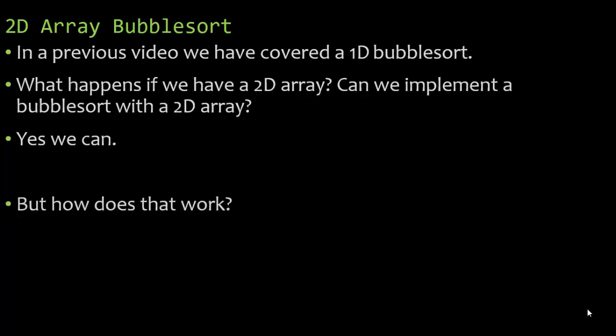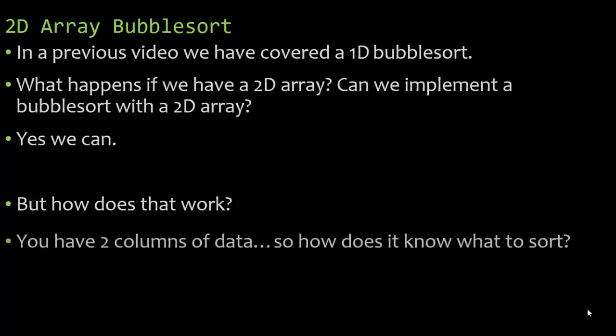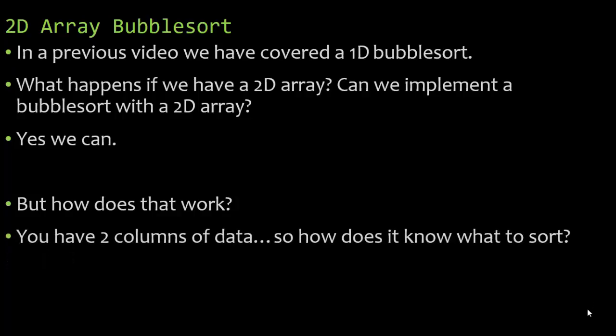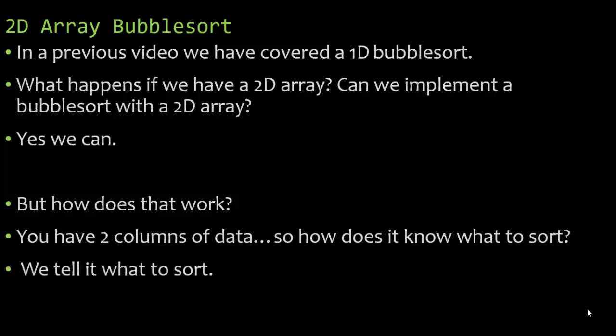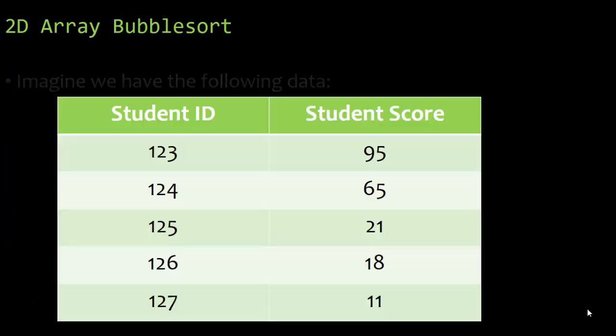But how does that work? Because in a 1D array, you only have one column to work with. In a 2D array, you have two columns of data. So how does the computer know what to sort? Well, we tell it what to sort.